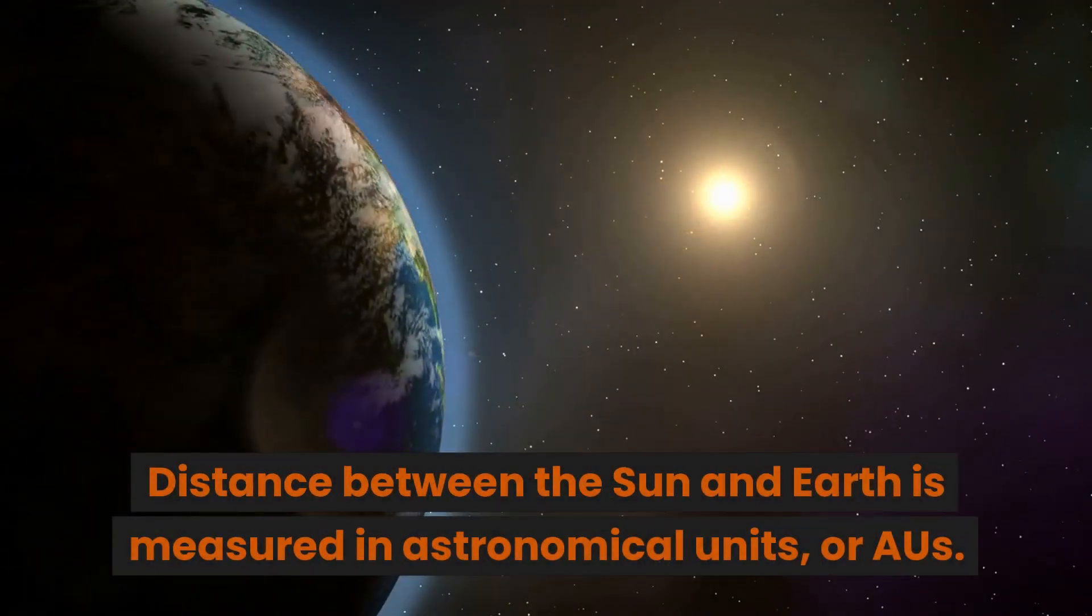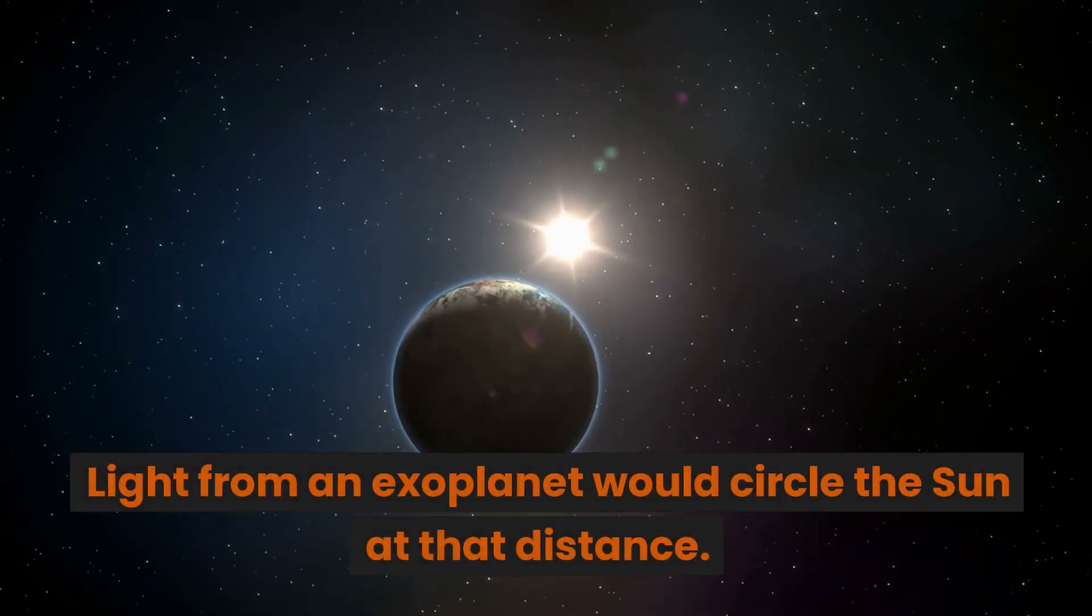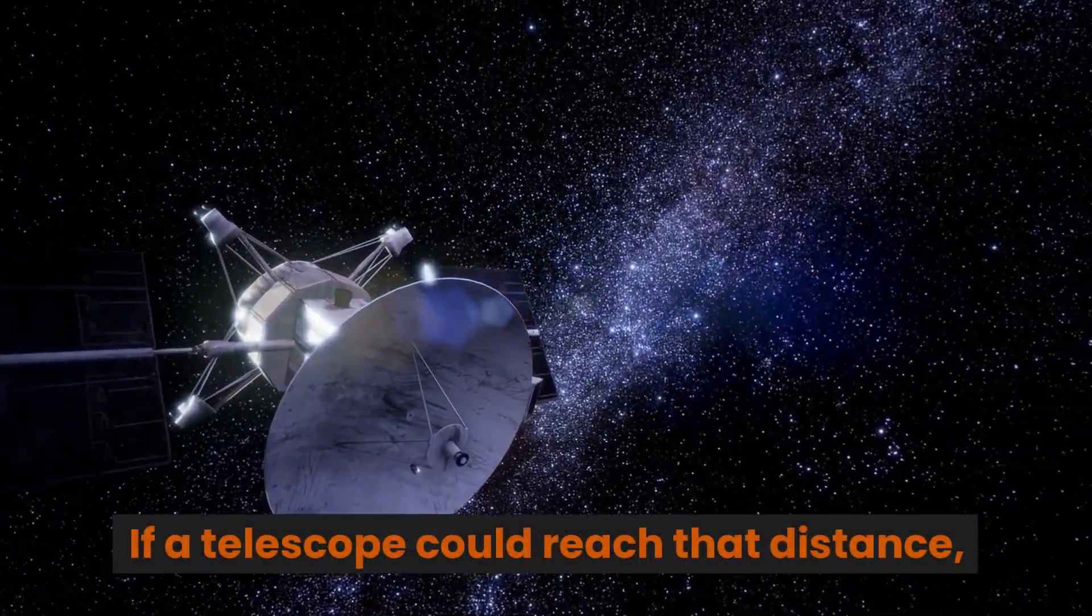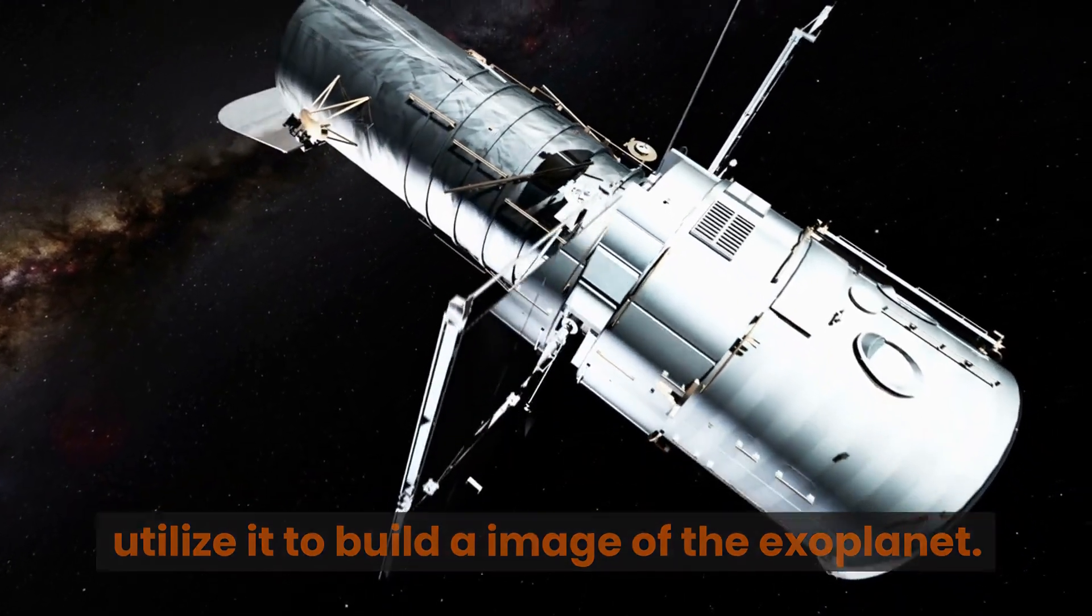Distance between the sun and earth is measured in astronomical units, or AUs. Light from an exoplanet would circle the sun at that distance. If a telescope could reach that distance, it could gather the light from the ring and utilize it to build an image of the exoplanet.